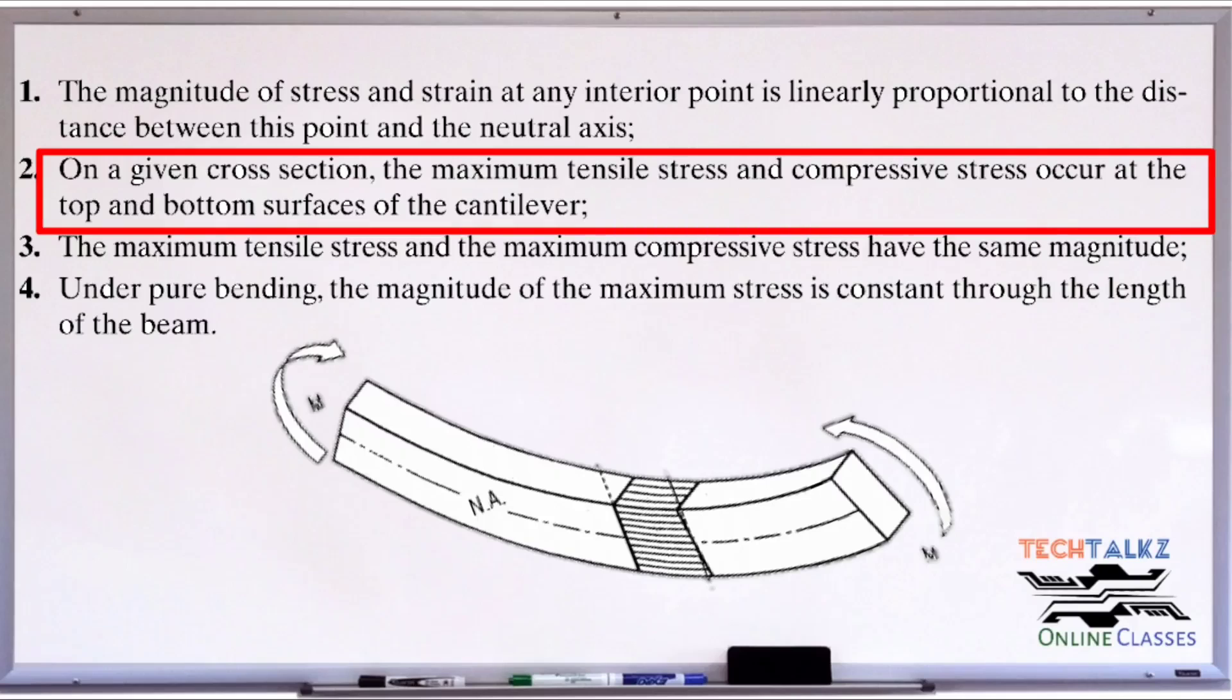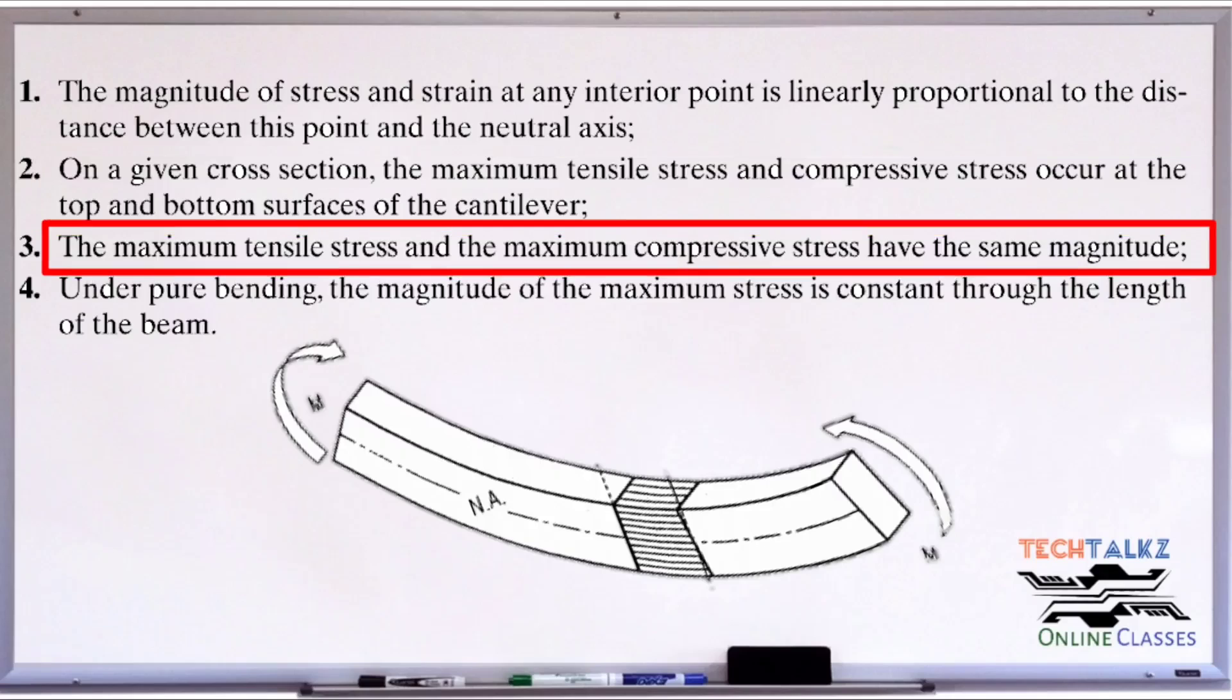Second point: on a given cross section, the maximum tensile stress and the maximum compressive stress have the same magnitude.